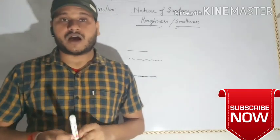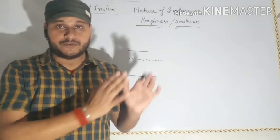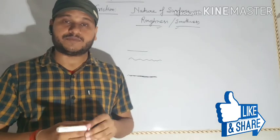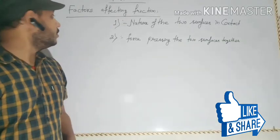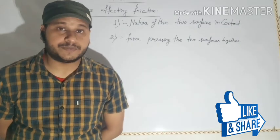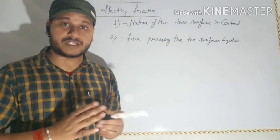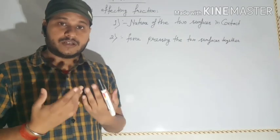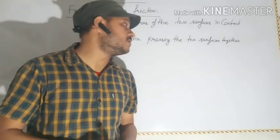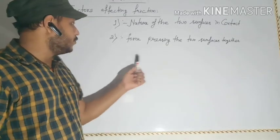Now let us talk about the factors affecting friction — that is, the factors on which the magnitude of frictional force depends. There are two factors. The first factor is the nature of the two surfaces in contact: roughness and smoothness. More roughness means more frictional force; more smoothness means less frictional force. The second factor is the force pressing the two surfaces together.